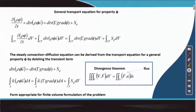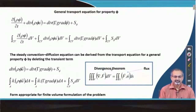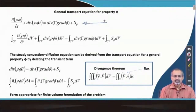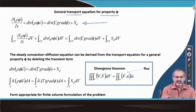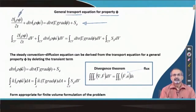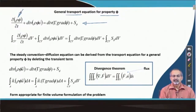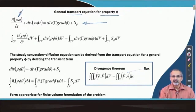In some earlier lectures, we had talked about a general transport equation for property phi. You may recall that a differential form of such a transport equation, which essentially models the transport of the property phi, could contain different terms. The first term contains a time derivative.